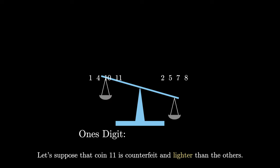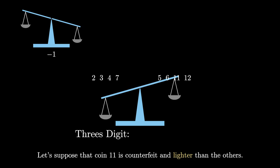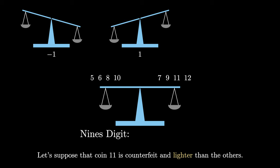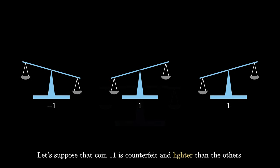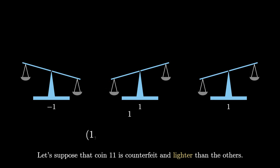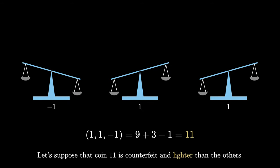Let's check another example where coin 11 is counterfeit but lighter. For the ones digit weighing, coin 11 is on the left so the scale tips right, giving negative 1. For the threes digit, coin 11 is on the right so the scale tips left, giving a digit of 1. For the nines digit, coin 11 is again on the right so the scale tips left, giving a digit of 1. Reading right to left, the balanced ternary representation is 1, 1, negative 1, which equals 9 plus 3 minus 1, or positive 11. But since 11 was one of the numbers we negated in our representative list, coin 11 is counterfeit and lighter than the others.